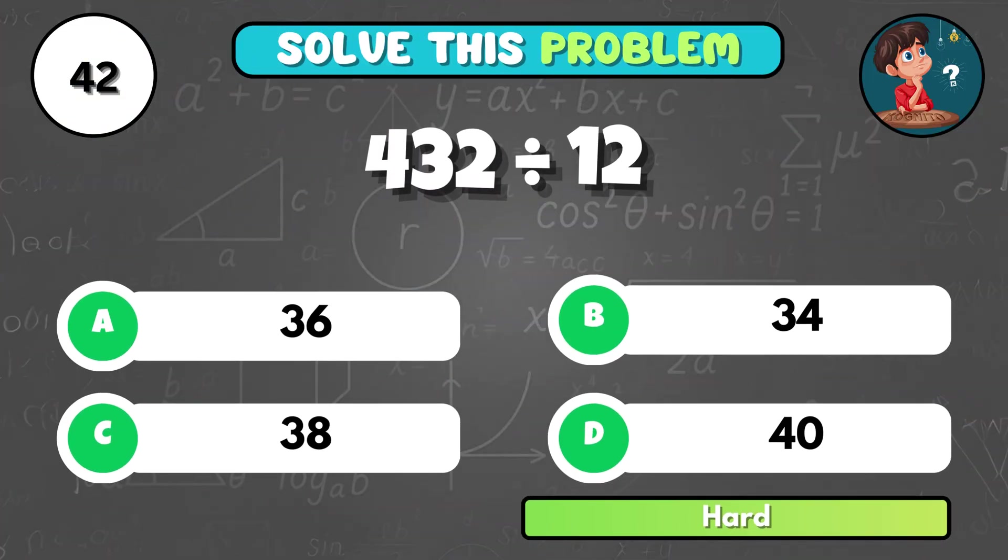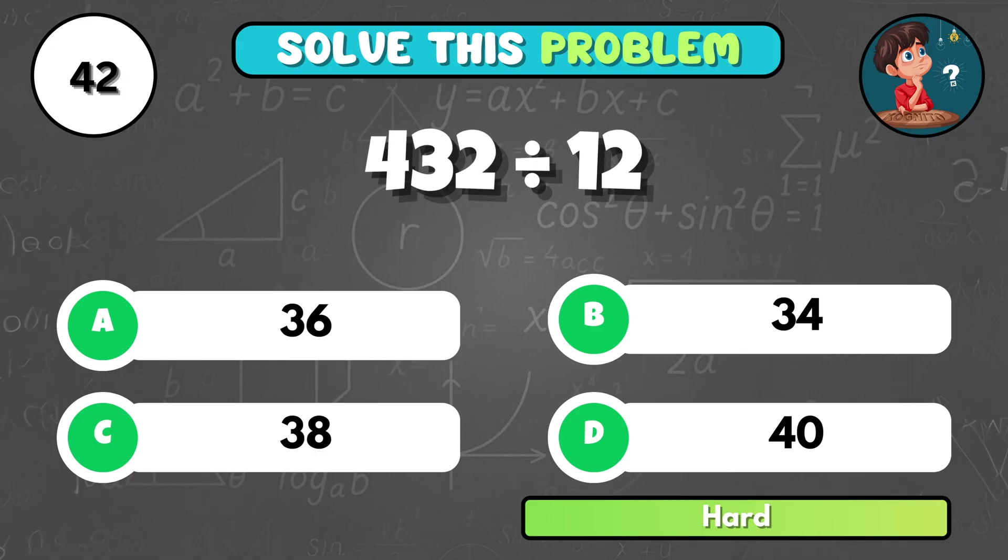What is the result of 432 divided by 12? That's A, 36.